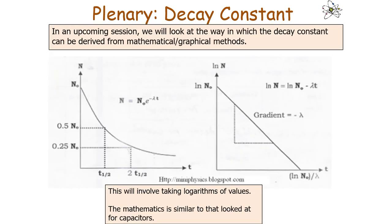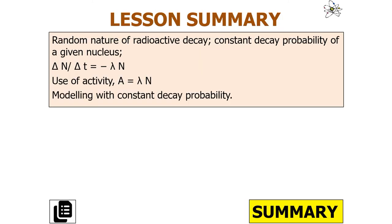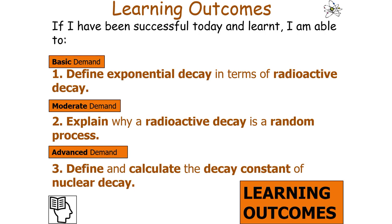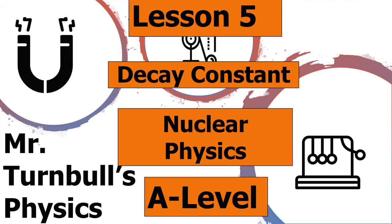We'll also look at ways to derive the decay constant by mathematical or graphical methods, involving taking logarithms of values — similar to what we did with capacitors. To summarise today's lesson: we understand the random nature of radioactive decay, the constant decay probability for a given nucleus, the equation ΔN/Δt = −λN, and the activity equation A = λN. We can define exponential decay in terms of radioactive decay, explain why it is a random process, and define and calculate the decay constant. Thank you for listening, and have a lovely day.